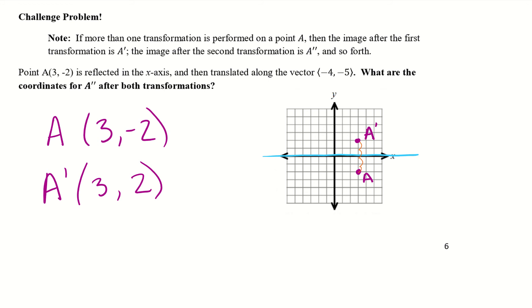Alright. And then we want to translate this point along the vector negative 4, negative 5. So that means I'm going to go left 4, 1, 2, 3, 4, and down 5. 1, 2, 3, 4, 5. So my new A point, my A double prime, is down here. So let's go ahead and write that coordinate point. So negative 1, comma, 1, 2, 3, negative 3. So here are the coordinate points after all those transformations.